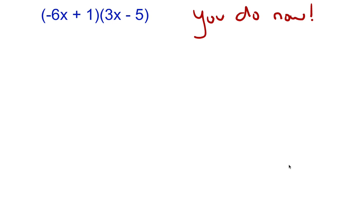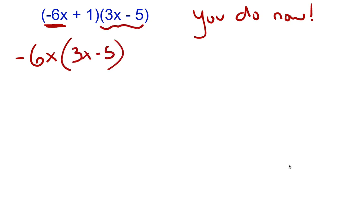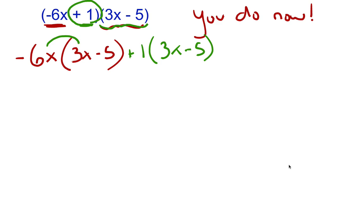Hopefully you solved this yourself. Take the first piece of the first binomial, negative 6x, and multiply it by the second binomial (3x minus 5). Then take the plus 1 and multiply it by (3x minus 5). Negative 6x times 3x gives negative 18x squared, and negative 6x times negative 5 gives positive 30x.